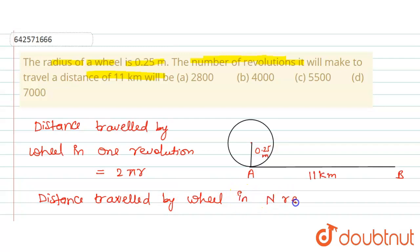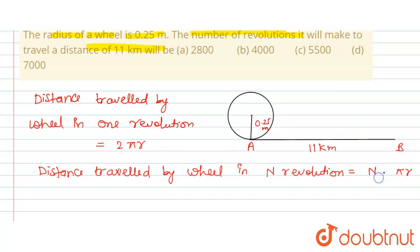will be equal to N × 2πr, okay? So this is also given by 11 kilometer or we can say that 11,000 meter, okay?